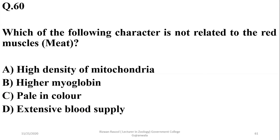Which of the following is not related to red muscles? Red muscles are not pale in color — they have high density of mitochondria, higher myoglobin content, as well as an extensive blood supply. So C is the correct answer — pale color is not a feature of red muscles.